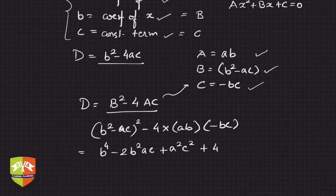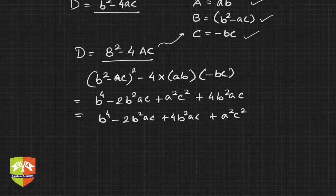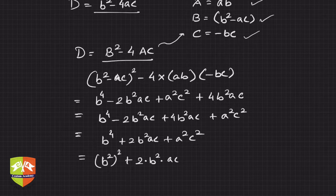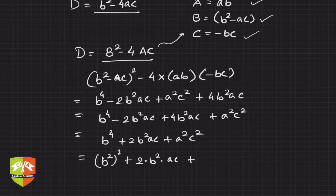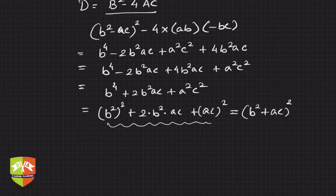This gives us plus 4b²ac. Simplifying further: b⁴ minus 2b²ac plus 4b²ac plus a²c², which equals b⁴ plus 2b²ac plus a²c². If you look closely, this is (b²)² plus 2·(b²)·(ac) plus (ac)², which is nothing but (b² plus ac)² whole squared. So D equals (b² plus ac)².